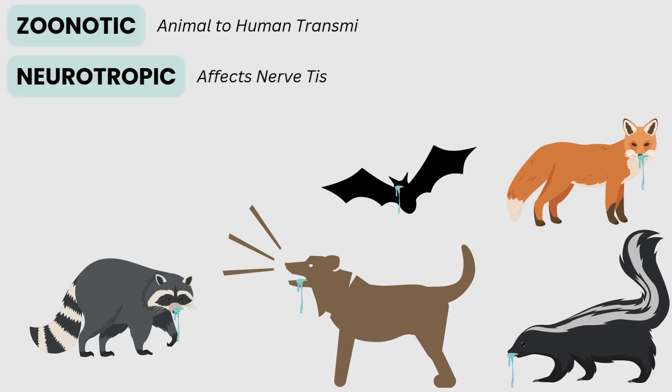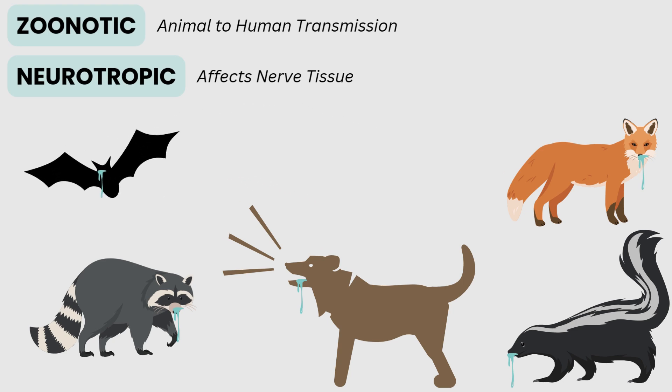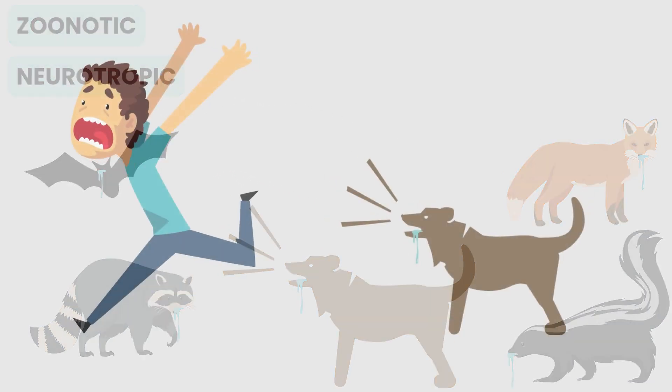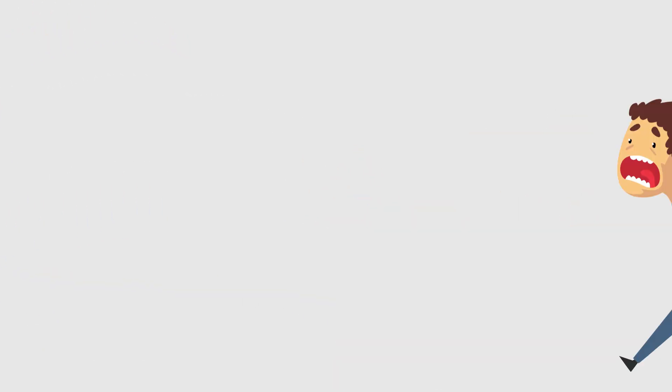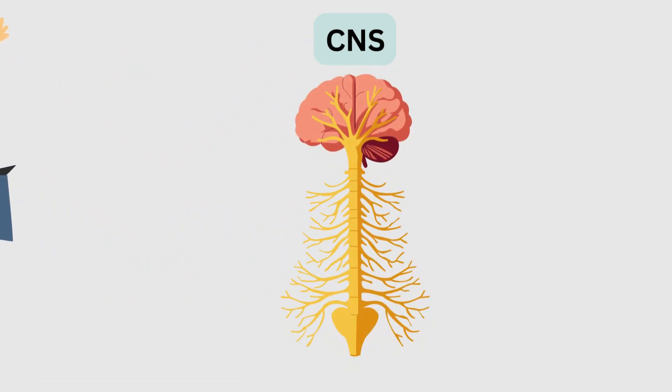Rabies is a zoonotic and neurotropic viral disease caused by the rabies virus. Put simply, humans can become infected from the saliva of non-human animals, and the infection largely impacts the central nervous system.